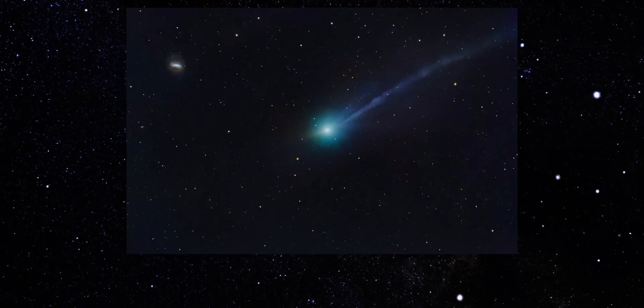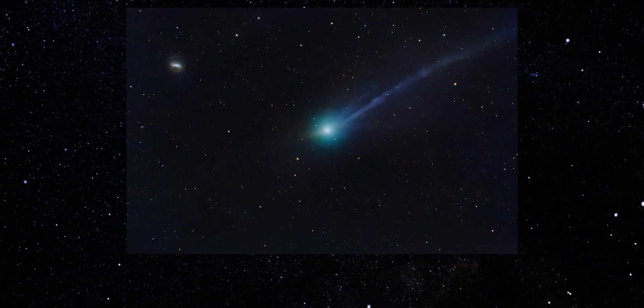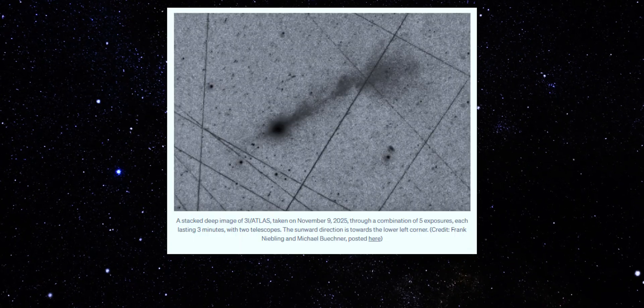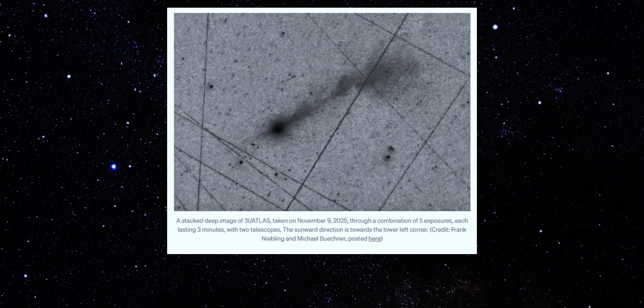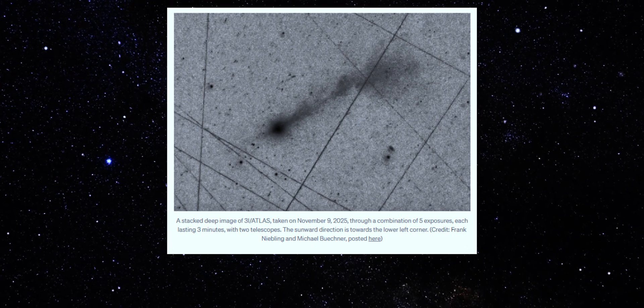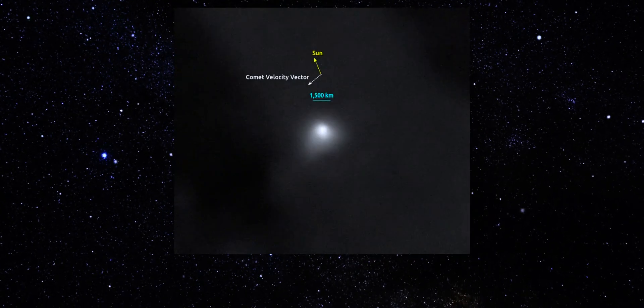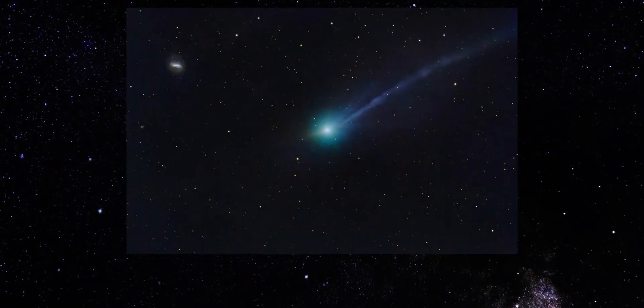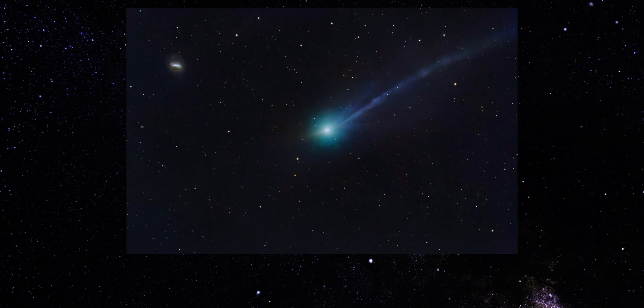Which brings us to now. Today's frames don't just show more dust or a brighter glow, they reveal structure, a genuine directional feature cutting through the coma in a way we haven't observed from this object before. Whether the cause is rotation, an asymmetrical outflow, or something we haven't identified yet, one thing is certain, 3-Eye Atlas isn't done surprising us.